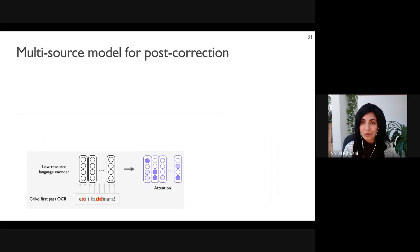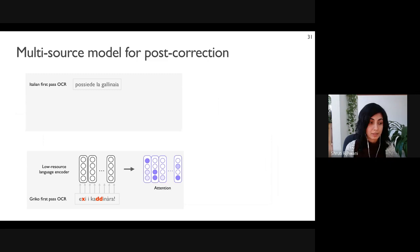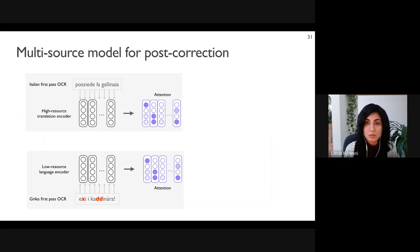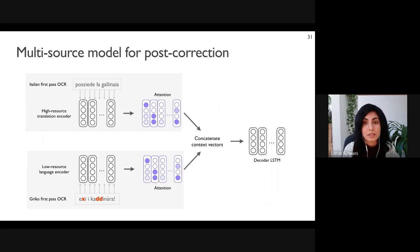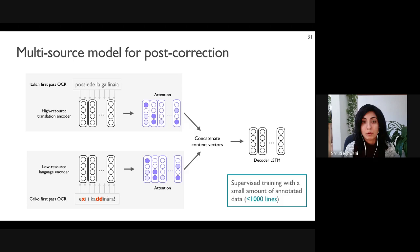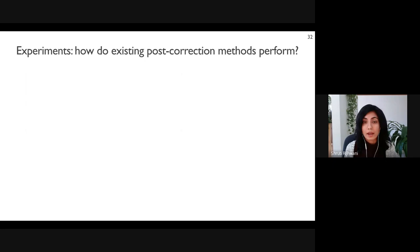To use these translations in our model, we have a character-level encoder for the low-resource language — for example, the first-pass OCR in Greco — and we add another encoder that processes the OCR transcription for the translation, such as Italian. To use information from both sources, we concatenate the context vectors from both attention mechanisms to be used in the decoding process. This multi-source mechanism essentially conditions the decoder additionally on the text translation. The model is trained in a supervised way with the small amount of annotated data we have.